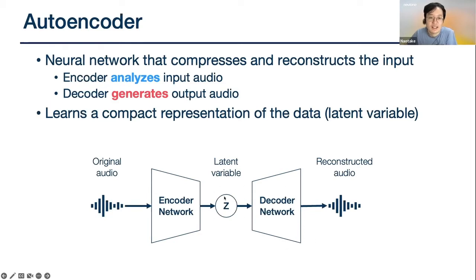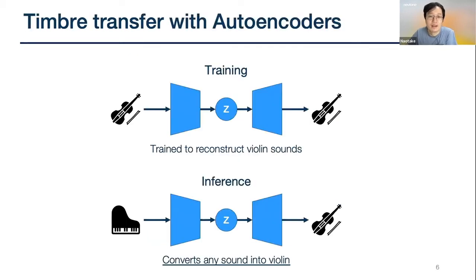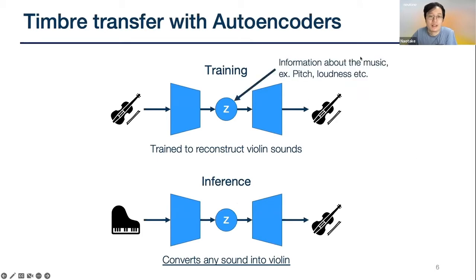The latent variable might contain things like pitch or loudness, but it's very vague and can convey a lot of information besides that as well. During training, the model is trying to reconstruct a certain sound. If you train the model on violin sounds, then the input audio will be violin and the output audio should be the same violin sounds.